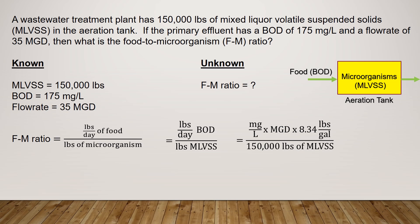On the top, this is the pounds per day formula. Since they're asking for the pounds per day of BOD, I wrote down that formula: milligrams per liter of BOD multiplied by MGD — the flow rate going into the aeration tank — multiplied by the conversion factor 8.34 pounds per gallon. We have the BOD as 175 mg per liter and the flow rate as 35 MGD.